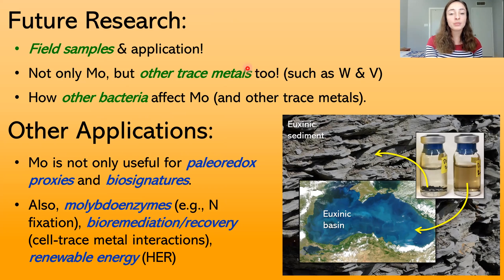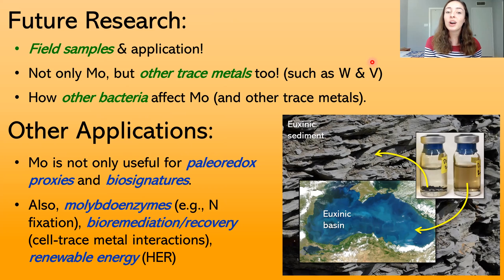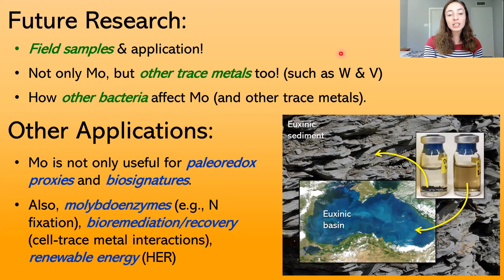Another clear next step is to look at other trace metals. Molybdenum is not the only redox-sensitive trace metal — it has twin-like trace metals such as tungsten and vanadium that may behave very similarly to molybdenum and therefore act as supporting proxies. When analyzing a rock for molybdenum, you can also look at tungsten or vanadium species, concentration, and isotopic fractionation to understand even more about that redox environment, and possibly biology and pH as well.